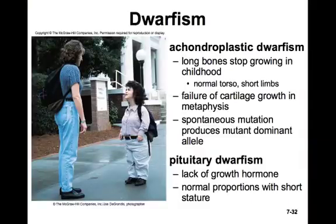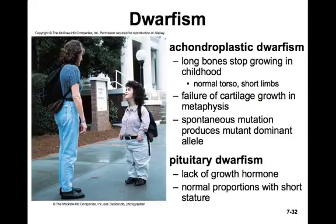Achondroplastic dwarfism is a condition in which long bones stop growing in length during childhood, resulting in normal torso length but short limbs. The problem is that cartilage doesn't grow at the metaphysis, and it's caused by a dominant genetic mutation. Another type, pituitary dwarfism, occurs when an individual lacks growth hormone, making normal bone growth in length and width impossible — people with pituitary dwarfism have normal proportions but very short stature.